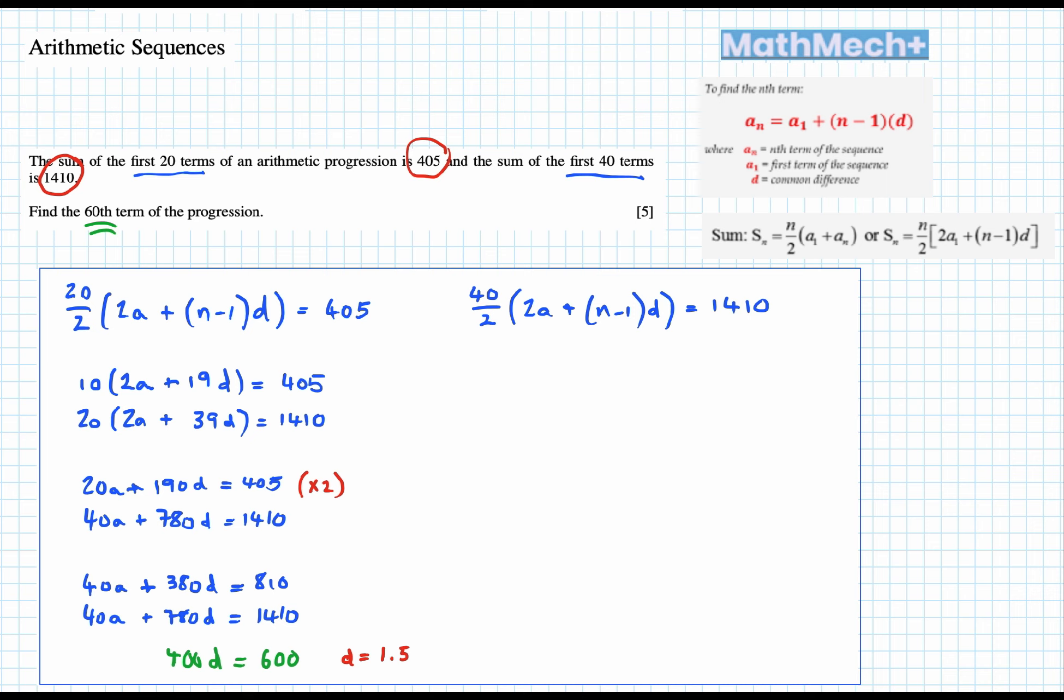From there, substitute that in to one of our progressions. When you sub it in, you should get 40a plus 780 times 1.5 equals 1410. Get your calculator out and solve it with your algebraic skills, and you'll get a nice whole number, 6. That's your first term.